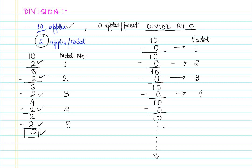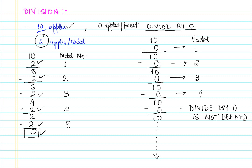This is a special scenario, so we say that divide by 0 is not defined. In higher classes, you will learn that it is also called infinity, because we can have infinite empty packets — you just cannot count it. So this is what we learned: divide by 0 is not defined.